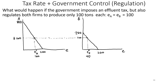What would happen if the government imposes an affluent tax but also regulates both firms to produce only 100 tons each? The government charges the optimal affluent tax of $160, but also mandates both firms produce only 100 tons of emissions each — rather than letting them choose, the government says there are two firms, 200 total, you each produce 100, and you're each taxed $160 on the 100 that you do produce. How would that affect the total cost for each firm?